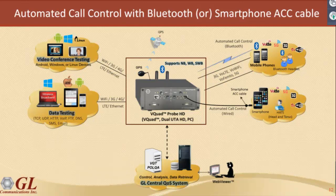With Bluetooth, we act as a headset and can place a call, answer a call, and disconnect a call. We can find out information about the phone such as signal strength, battery level, and what network we're on — all of which can be part of your test and your results. So as you're doing your test, we can actually tell you which network you're on by getting that information from the phone.